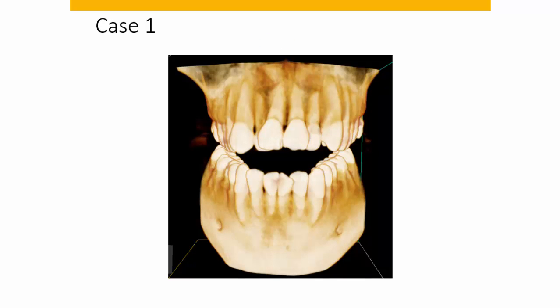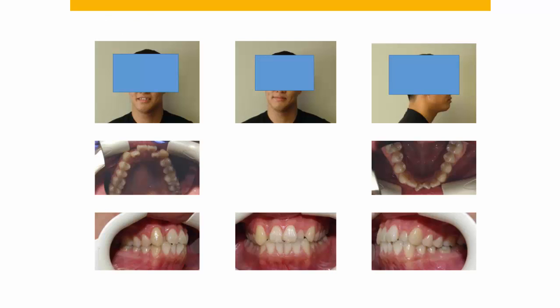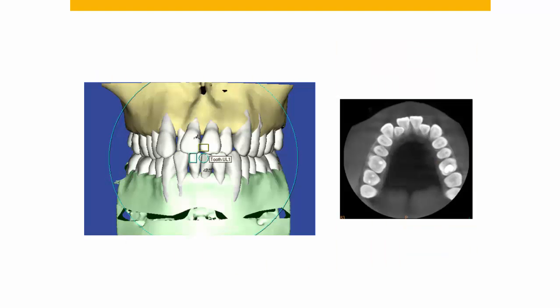I'd like to demonstrate what I mean by evaluation of the path using three clinical cases. This first case is a 29-year-old male. He's class one on the left, class two on the right. He has a Bolton discrepancy and lingually locked upper lateral incisors. This is his 3D reconstruction using the cone beam CT DICOM file, which allows you to simulate different types of treatment.